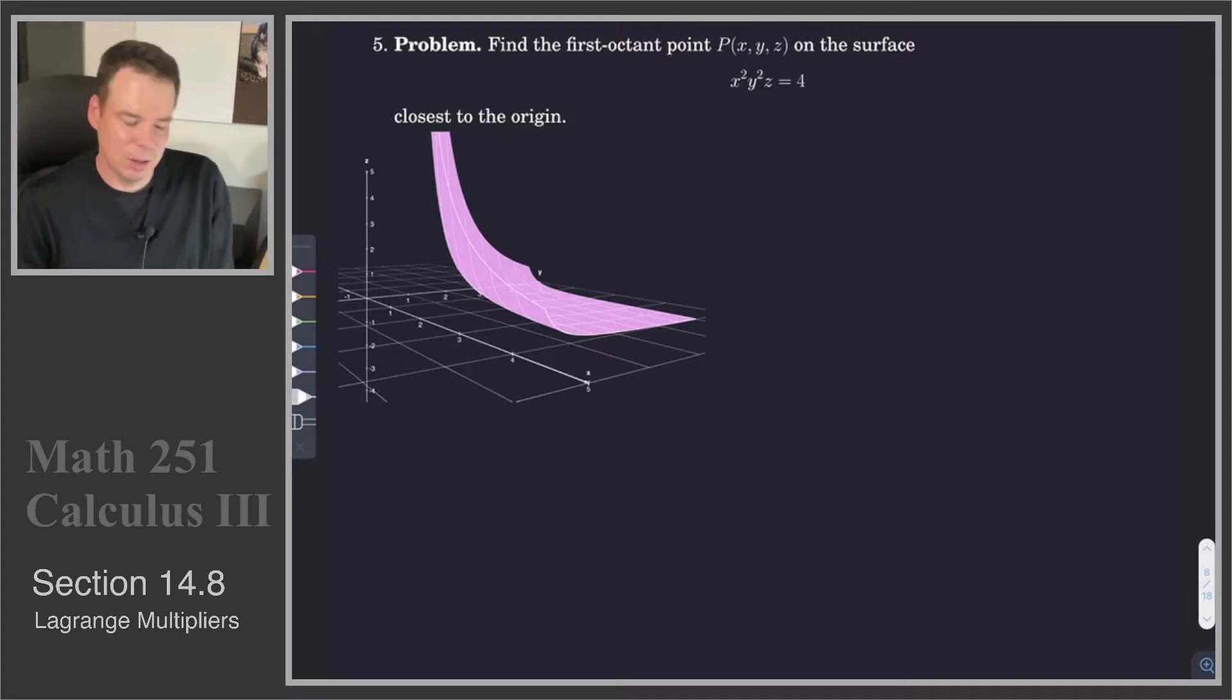Hi everyone. Let's have a look at another Lagrange multipliers problem. We want to find the first octant point on this surface that's closest to the origin. I'm just playing around with it a little bit. We're sort of looking for the point, maybe somewhere around here that's closest to the origin. What is that point? That's what we're interested in.